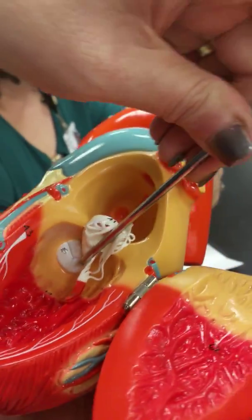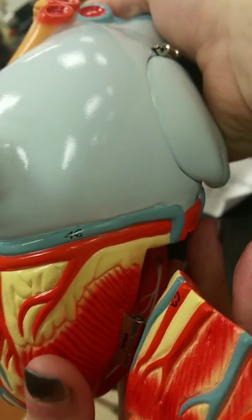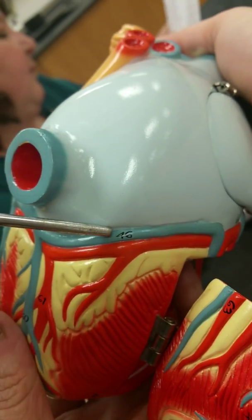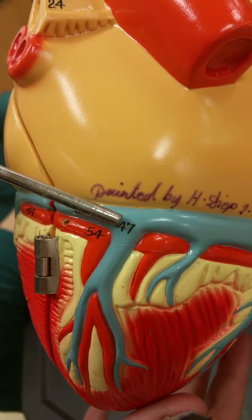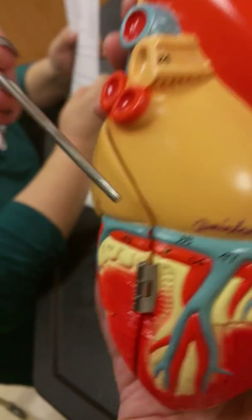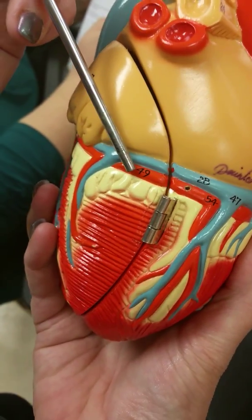46. Small cardiac vein. 47. Posterior vein of left ventricle. 49. Circumflex branch of left coronary artery.